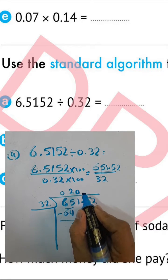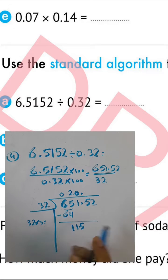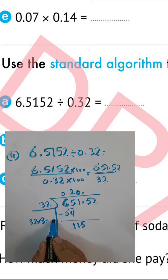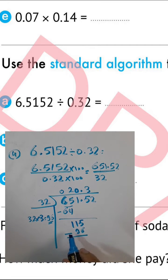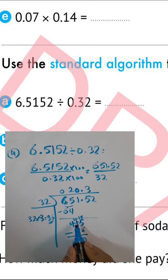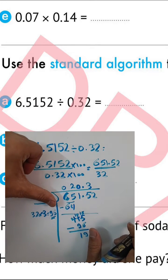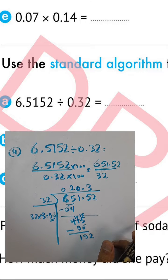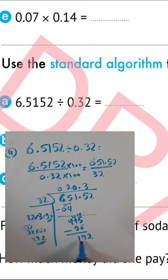Drop 1 here. 11 divided by 32 — we can't do it, so write 0. Put the point outside here, then drop 5. 115 divided by 32: cancel digit by digit, 11 divided by 3 gives nearest digit 3. 32 times 3 — 3 times 2 equals 6, 3 times 3 equals 9 — gives 96. Write 3 outside and 96 below. 115 minus 96: 5 minus 6 we can't do, so 15 minus 6 equals 9, and 10 minus 9 equals 1. Drop 2 here. 122 divided by 32: digit by digit 19 divided by 3; nearest is 6. 32 times 6 — 2 times 6 equals 12, carry 1; 3 times 6 equals 18, plus 1 equals 19. Write 6 outside and 192 below.